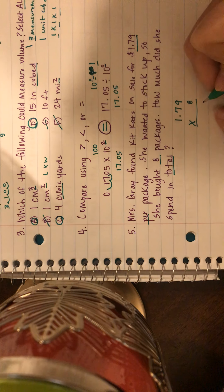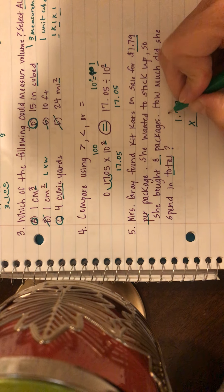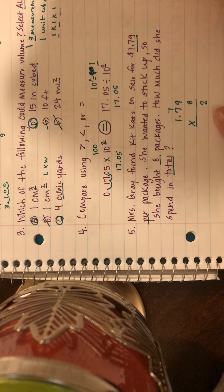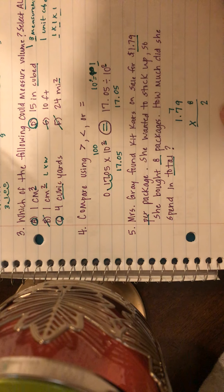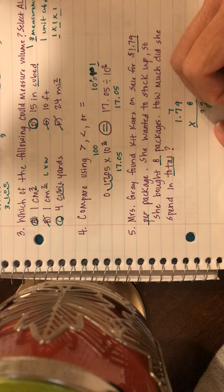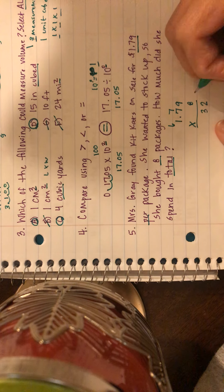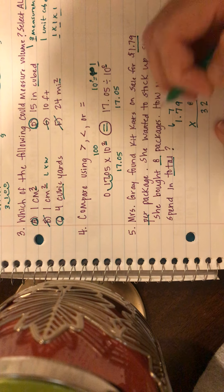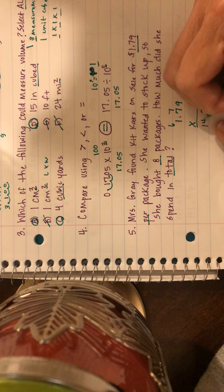Okay, I know that 9 times 8 is 72. I'm going to put my two, regroup my seven. Eight times seven is 56, 56 plus 7 is 63. And then I have 8 times 1 is 8, 8 plus 6 is 14.